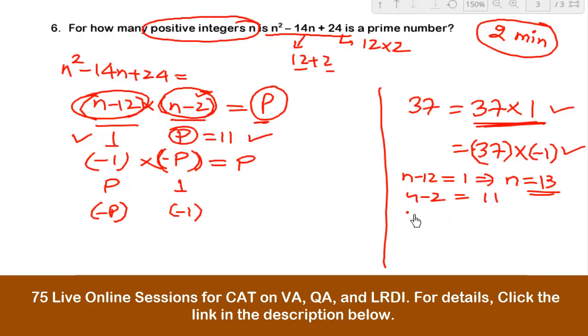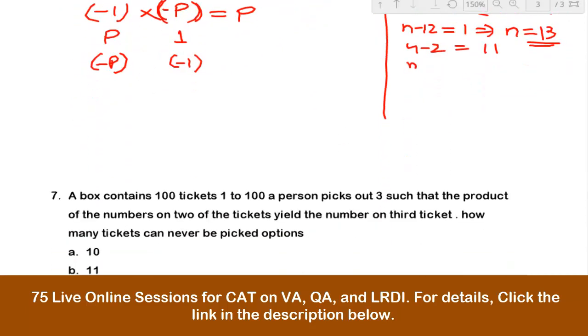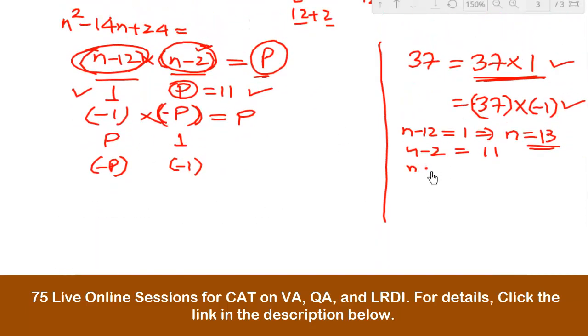So if I take n - 12 to be -1, here I will be getting the value of n to be 11. So if n is 11, then 11 - 12 is -1. We got that from here.